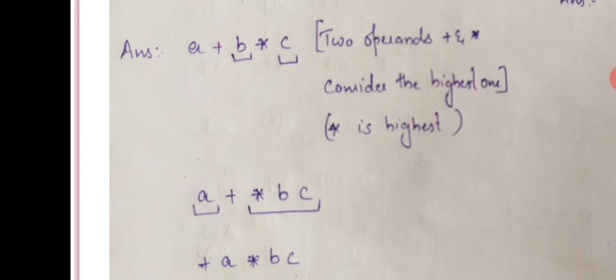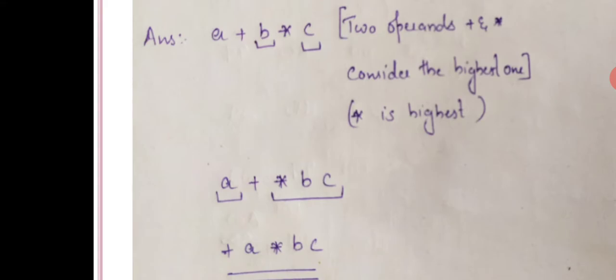For example, taking b star c — in prefix, the operator star is placed to the left of b and right of c. So b star c in prefix becomes star b c. Similarly for a star c, the operator goes to the left, giving star a c.